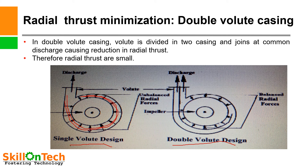In a double volute design casing, the casing is split into two parts and a ring is provided in the volute casing so that the area of the discharge path along the impeller is made uniform. Therefore, there is no pressure variation in the double volute design casing, and the residual radial thrusts are very small.